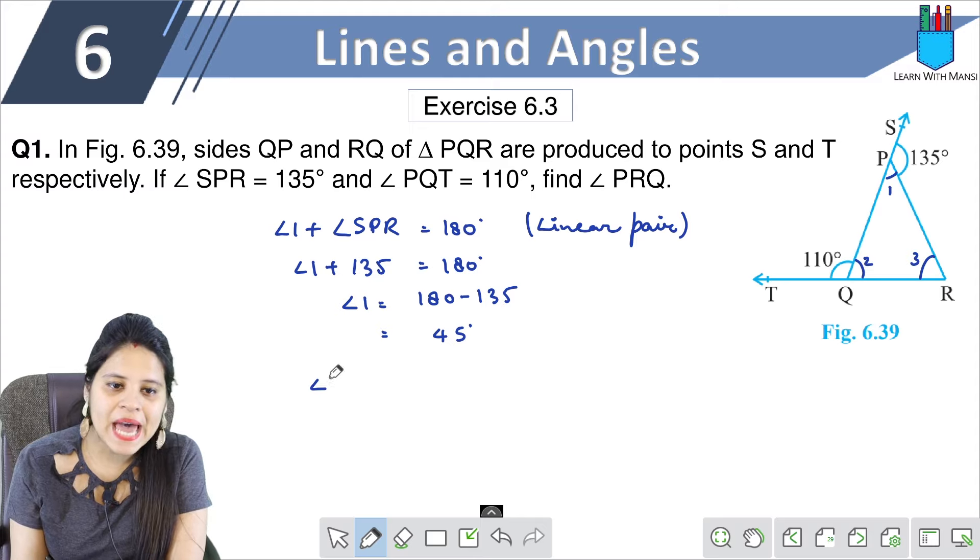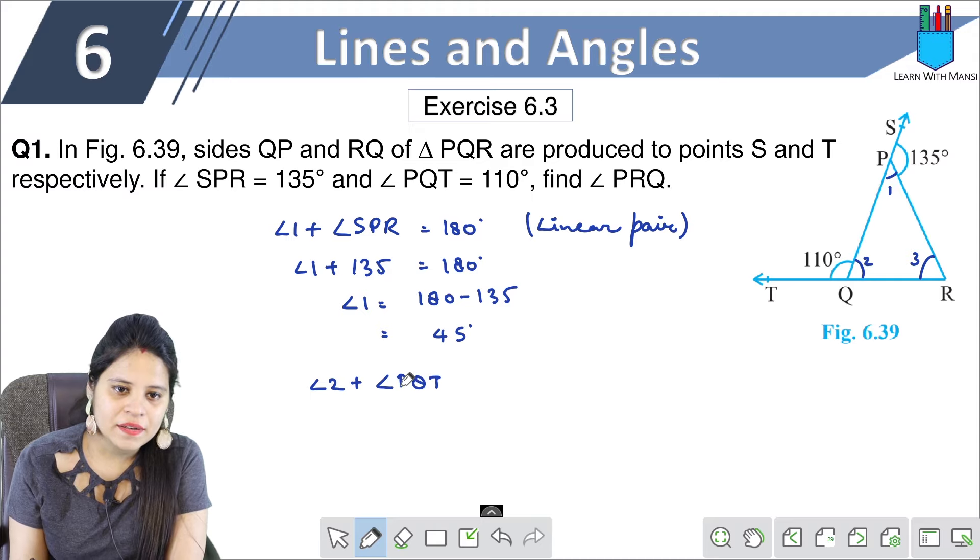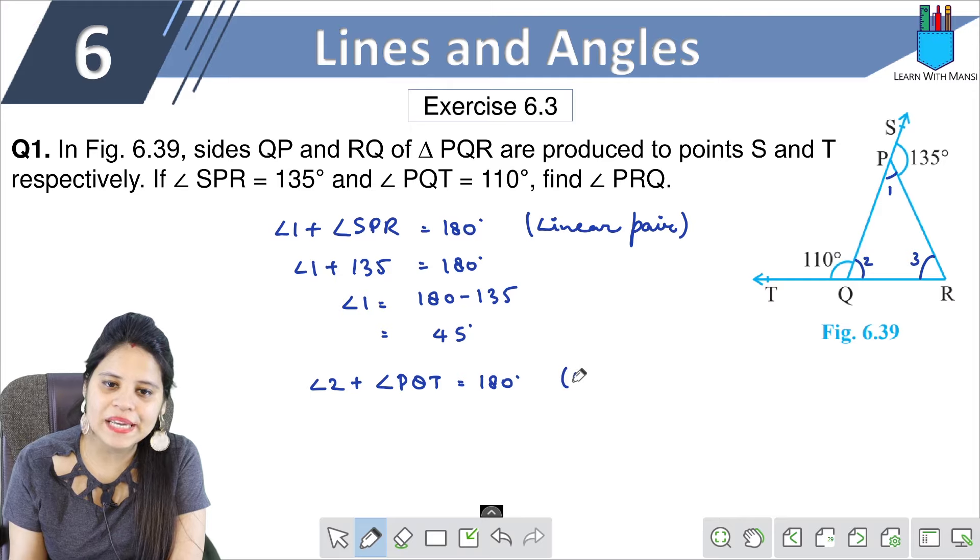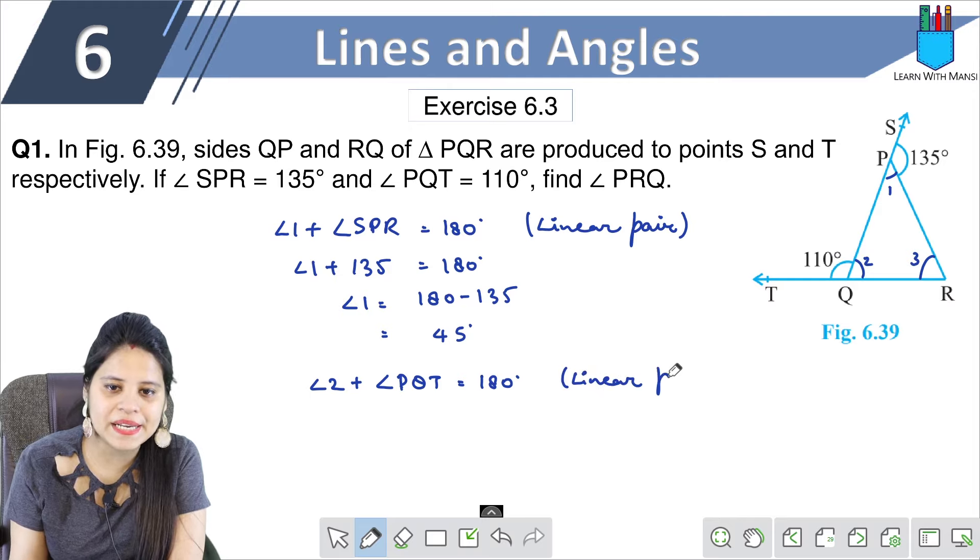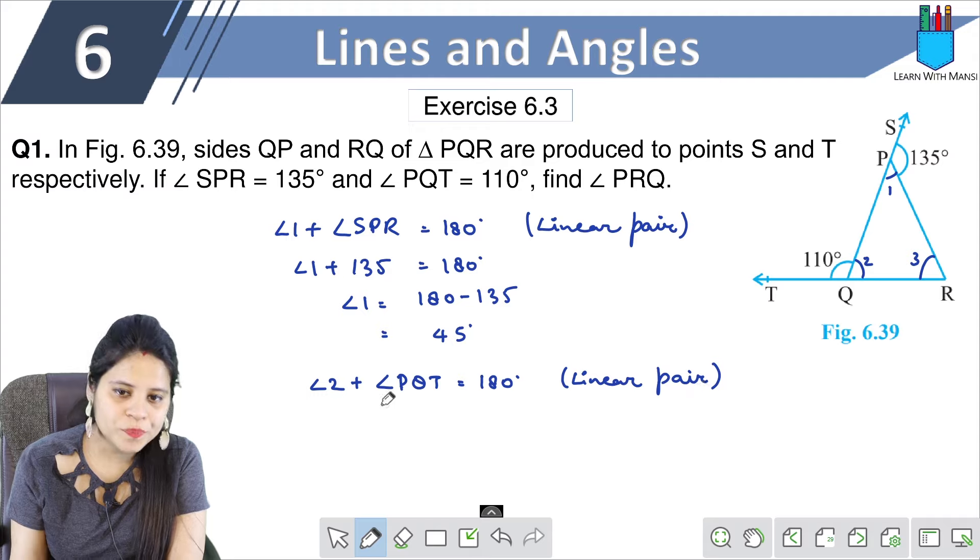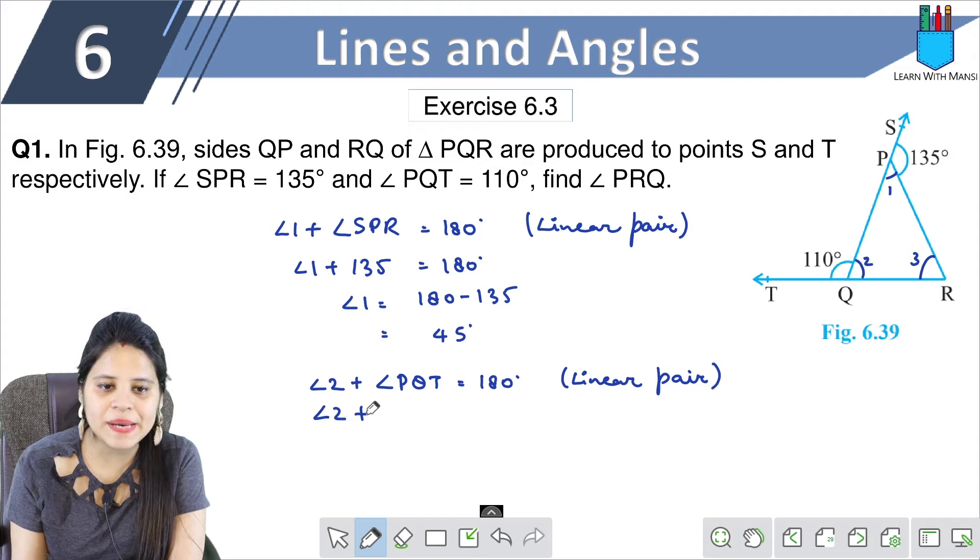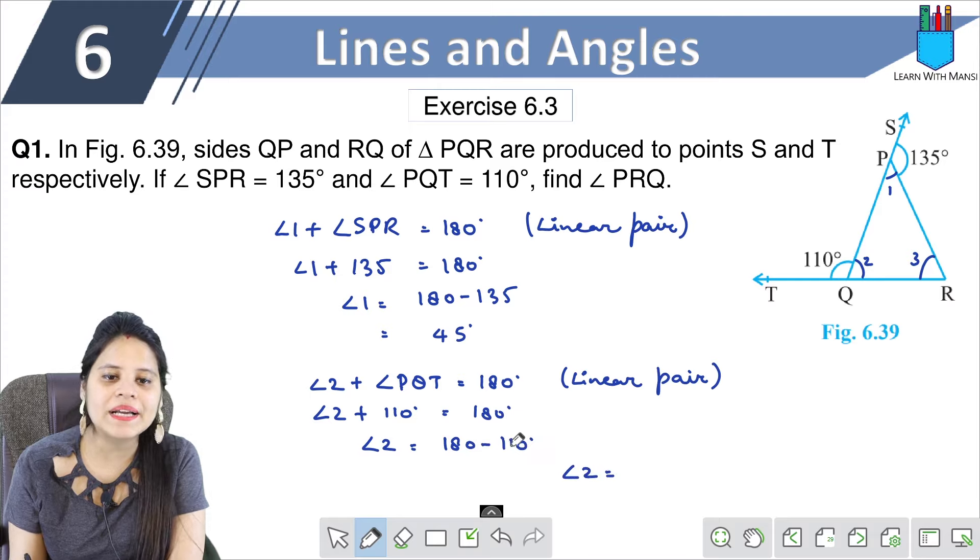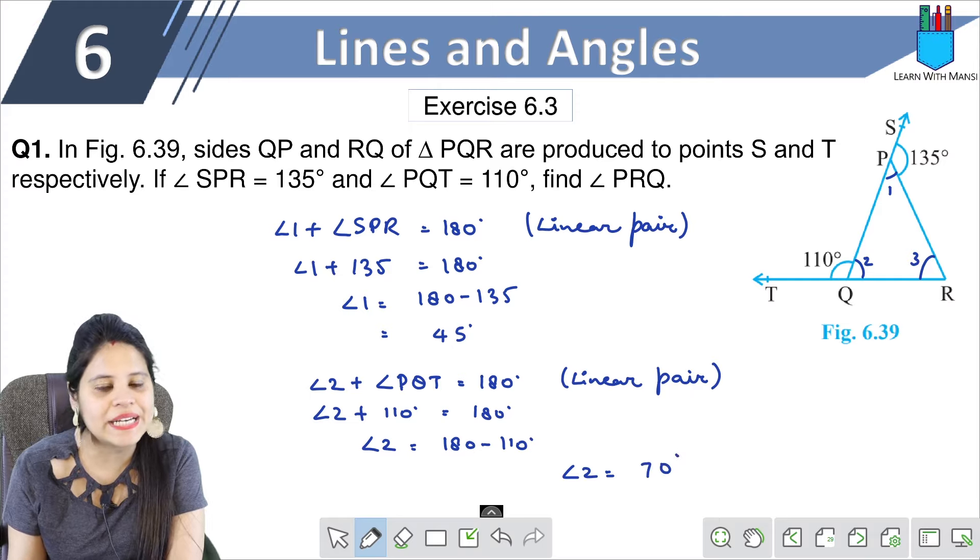Similarly, angle 2 plus angle PQT will make 180 degrees, which is again a linear pair. Angle 2 plus 110 equals 180 degrees. So angle 2 equals 180 minus 110, which is 70 degrees. We have angle 2.